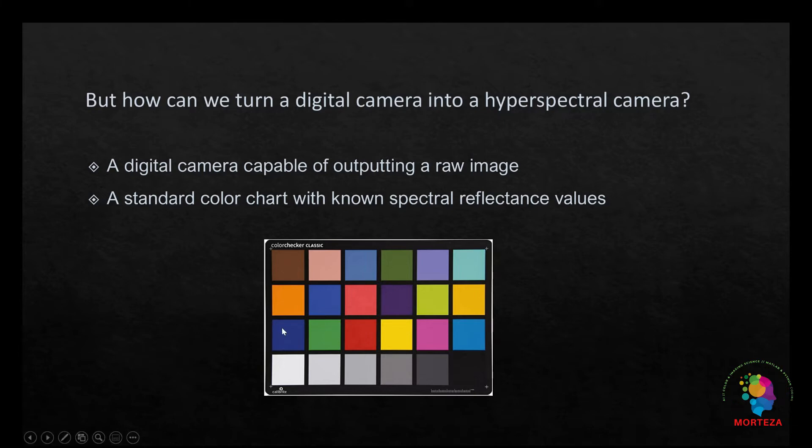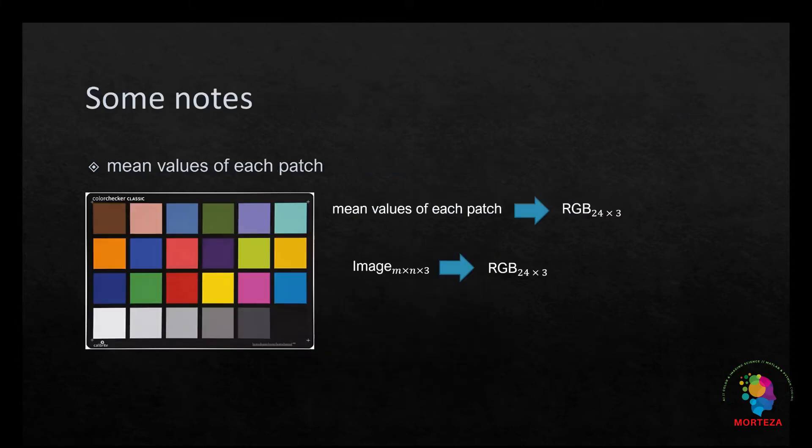And here is the color chart that we're going to use: Macbeth color checker, classic Macbeth color checker. This chart contains 24 patches. The mean patch value in terms of RGB camera response for each channel is computed. At the end of this process, we should have a matrix of size 24 by 3, where 24 stands for each patch and 3 stands for RGB channels.